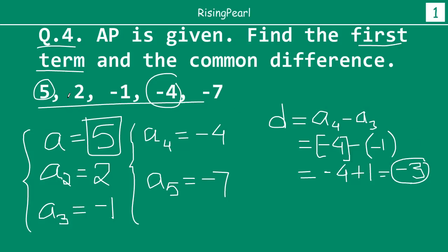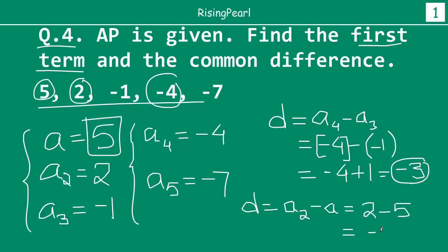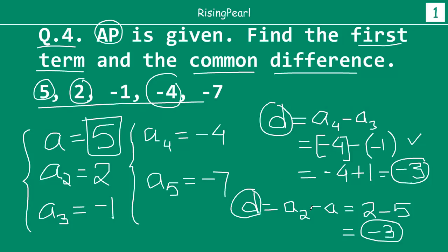Now, what we do know is that the common difference remains the same in a given AP. So what if you would have picked the second term? In that case, the common difference would have been A2 minus A. A2 is 2, minus A which is 5 — so 2 minus 5 is again minus 3. The reason I showed you all of this is that if it is given that the series of numbers is an arithmetic progression, it does not matter which term you pick from the second term onwards. If you pick any term and subtract the previous term from it, you will get the same common difference. The value of D will basically be the same regardless of which two consecutive terms you pick.